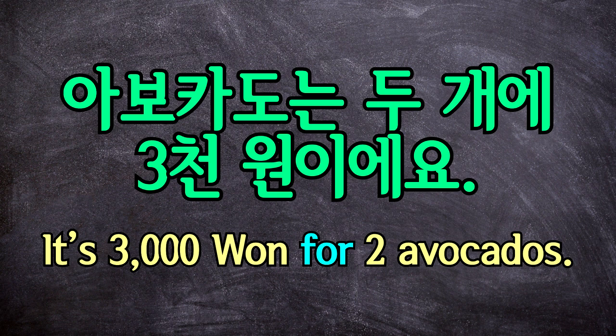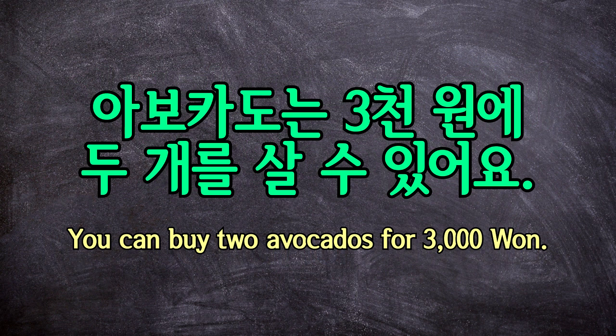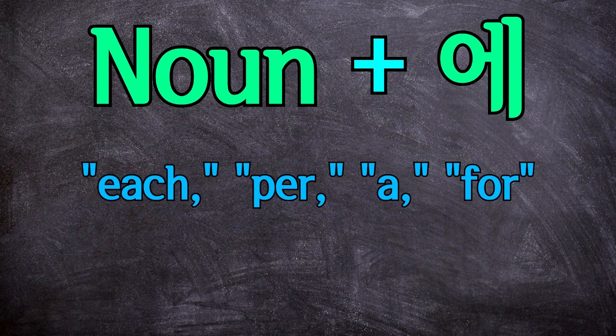You can even flip the sentence around and put the amount first to get a similar meaning. For example, instead of saying 'three thousand won for two avocados,' you could say: 아보카도는 삼천 원에 두 개를 살 수 있어요. You can buy two avocados for three thousand won. So when the particle 에 is used like this, 'for' will also sometimes be a good way to translate it. Just keep in mind that how you translate this is up to you, and the meaning in Korean doesn't change.